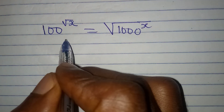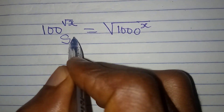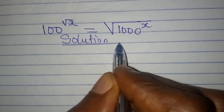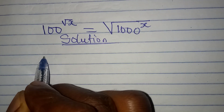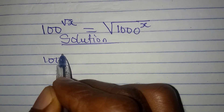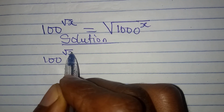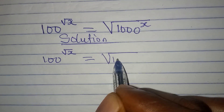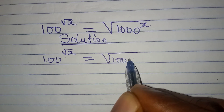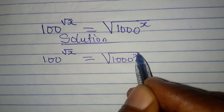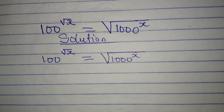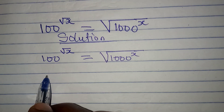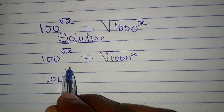Hello everyone, let's solve this problem very quickly. We have 100 to the power of root X equal to square root of 1000 to the power of X. So how do we deal with this?